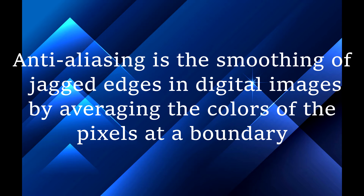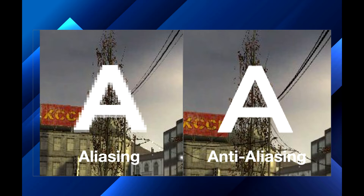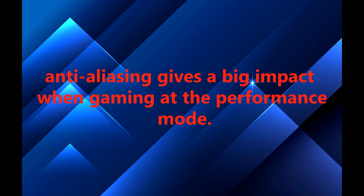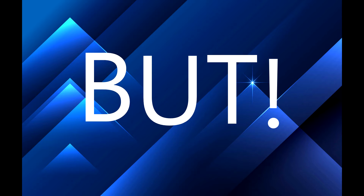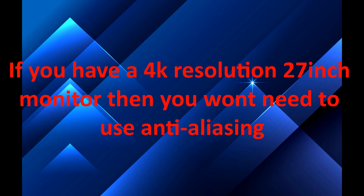What is anti-aliasing? Anti-aliasing is the smoothing of jagged edges in digital images by averaging the colours of the pixels at a boundary. For example, if you look at this image, the vision is blurred on the left side but smooth on the right side. Anti-aliasing gives a big impact when gaming at performance mode, but if you have a 4K resolution 27-inch monitor, you won't need to use anti-aliasing.